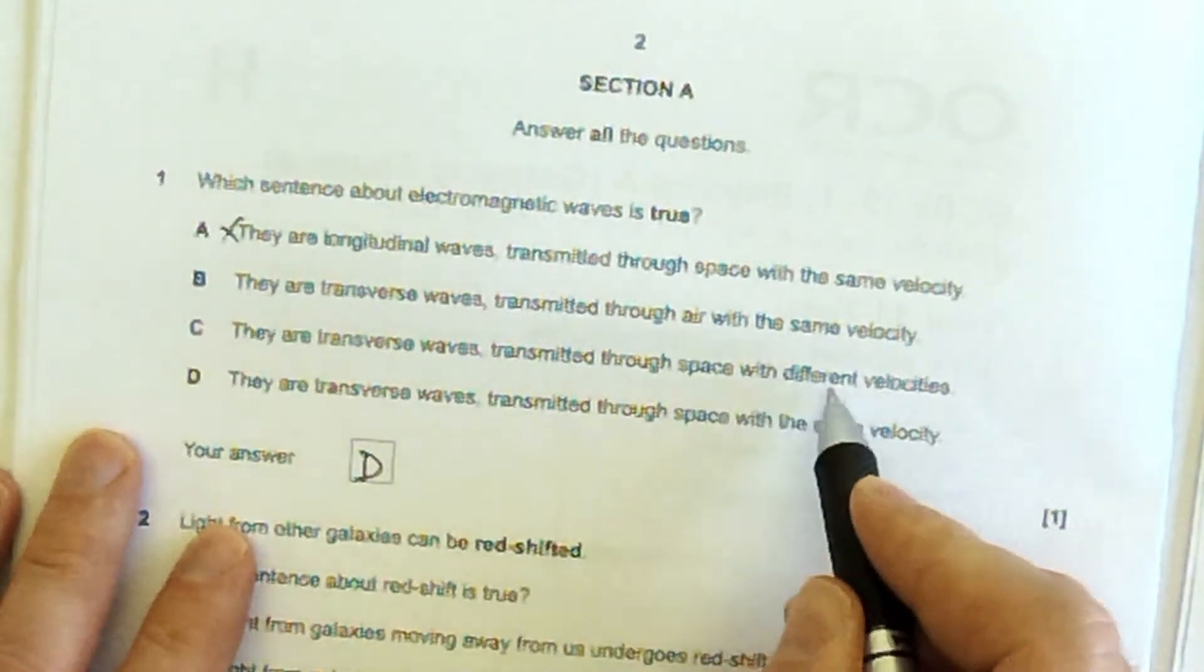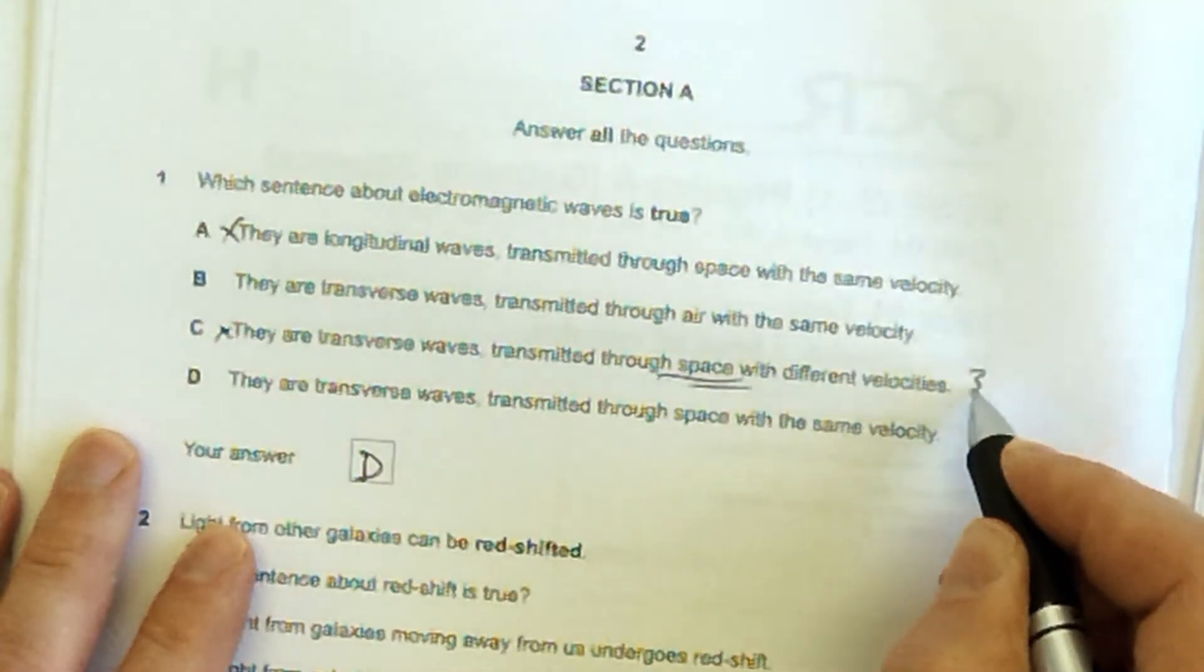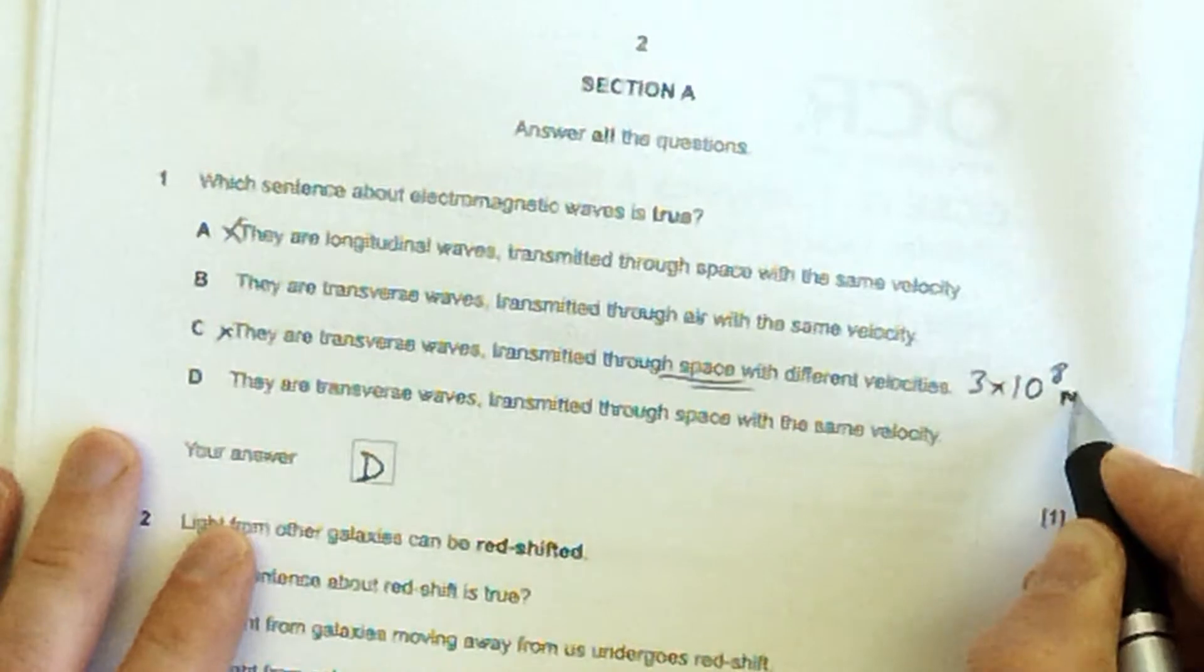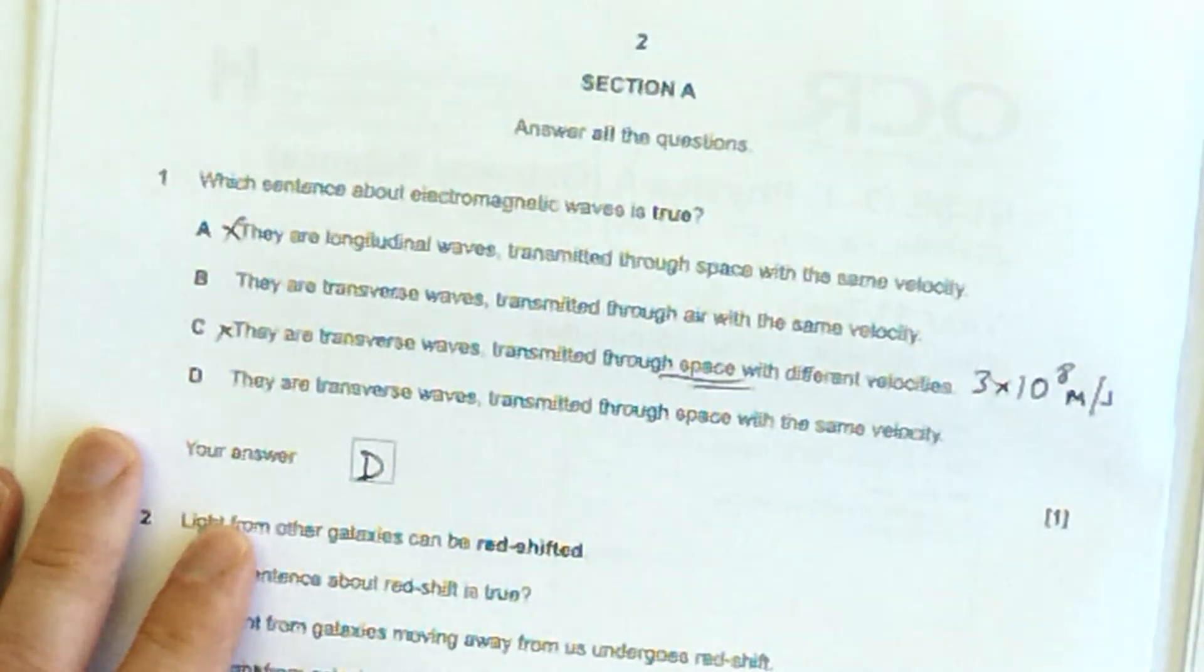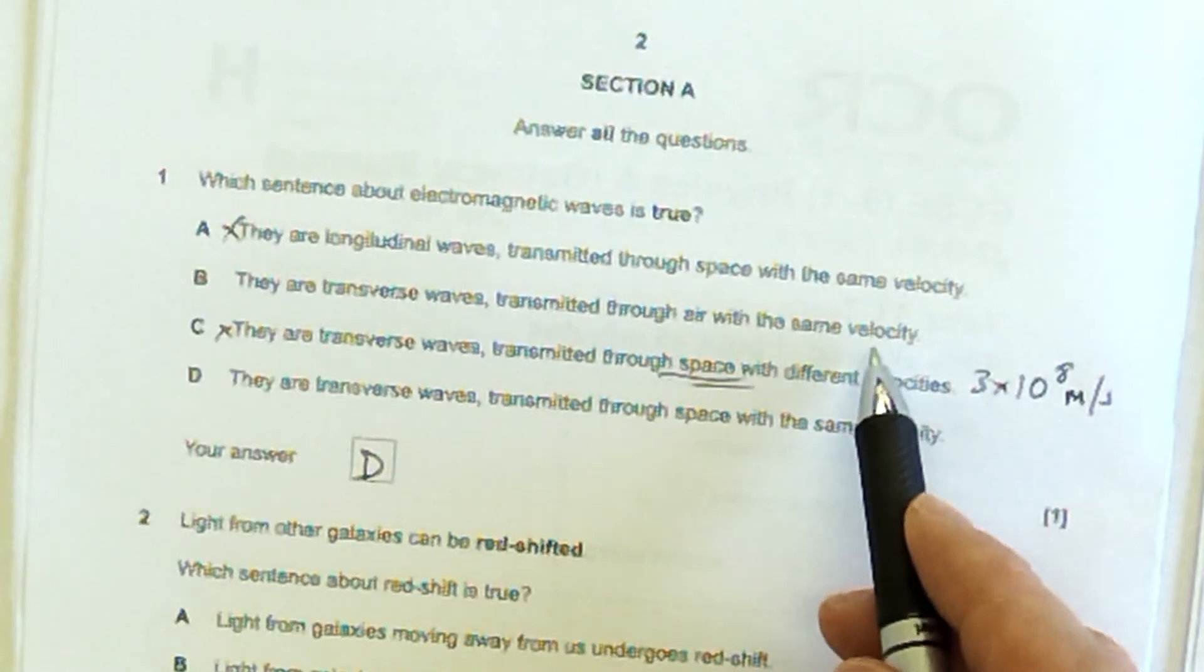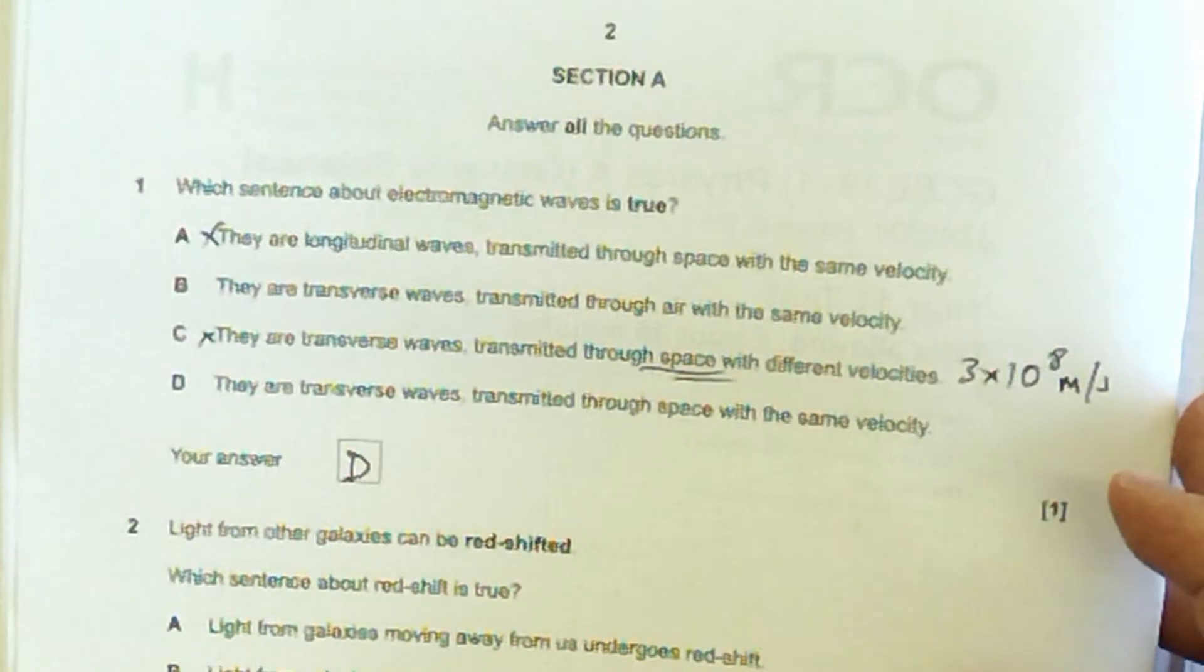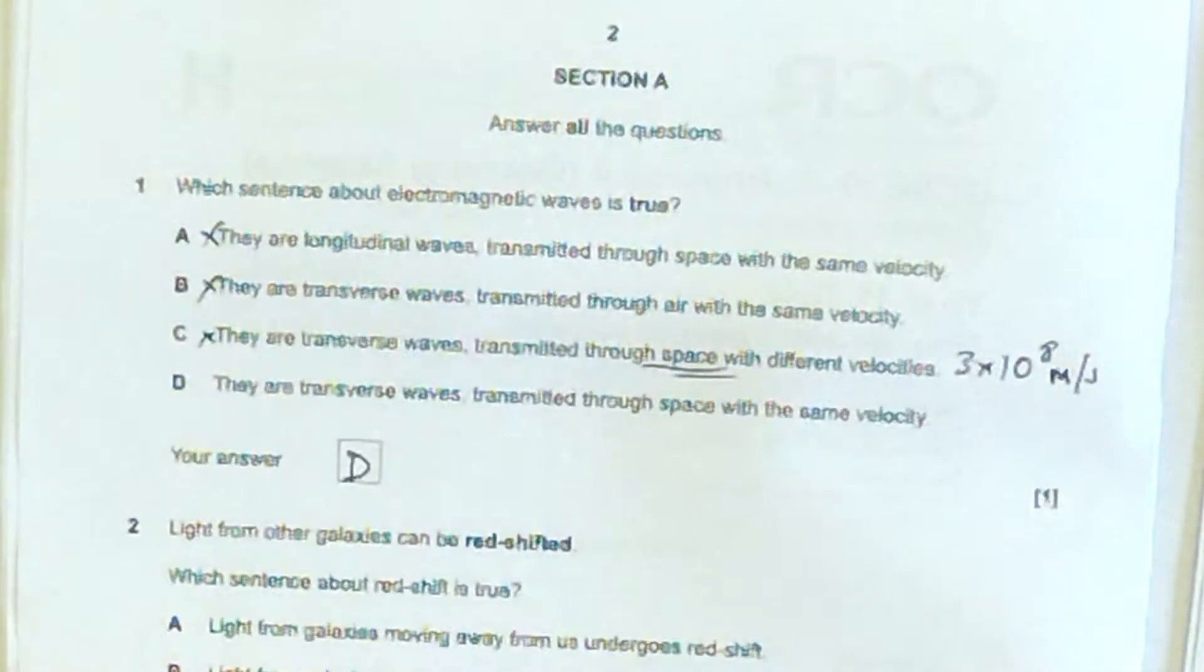It's a hard one to think about. It's definitely not different velocities. In empty space, they have the same speed, which is 3 times 10 to the 8 meters per second, speed of light in a vacuum. Through air with the same velocity, it could be that one, couldn't it? But air has different densities, so that is less likely to be the right answer than D is, so I'm going to go with D.